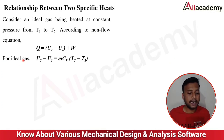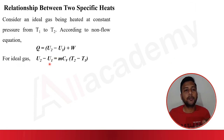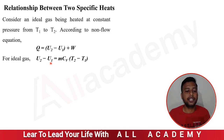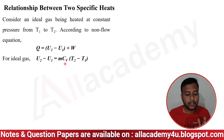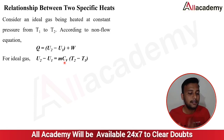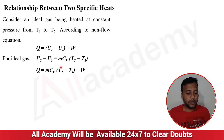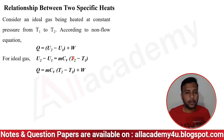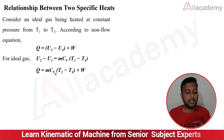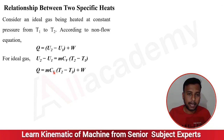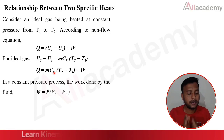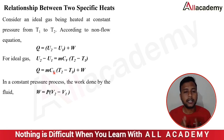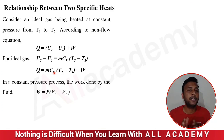For an ideal gas, U2 - U1 (the change in internal energy) can be defined as m·Cv·(T2 - T1). Substituting into the first equation gives: Q = m·Cv·(T2 - T1) + W. In the constant pressure process, the work done is W = p·(V2 - V1).